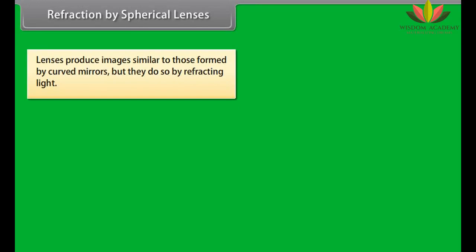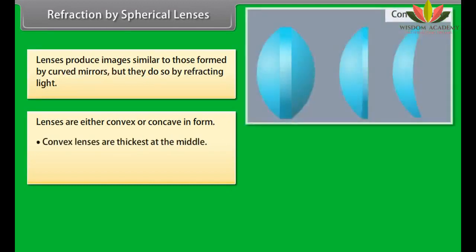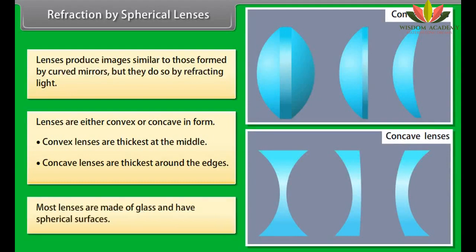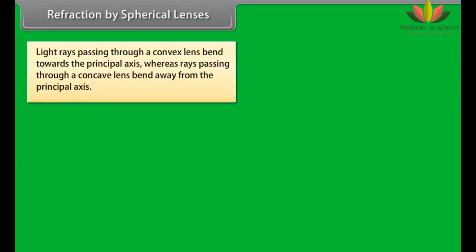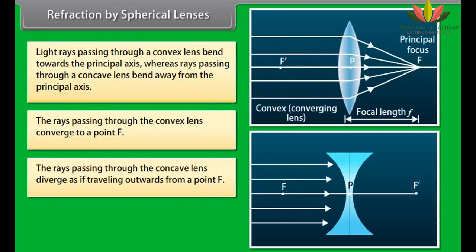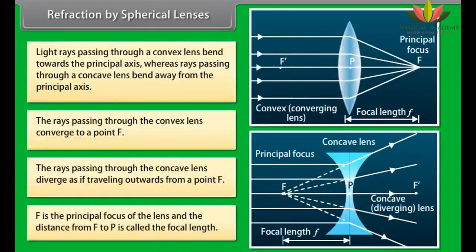Lenses produce images similar to those formed by curved mirrors, but they do so by refracting light. Lenses are either convex or concave. Convex lenses are thickest at the middle; concave lenses are thickest around the edges. Most lenses are made of glass and have spherical surfaces. Light rays through a convex lens bend towards the principal axis and converge to a point F. Rays through a concave lens bend away from the principal axis and diverge as if coming from point F. The distance from F to P is called the focal length.